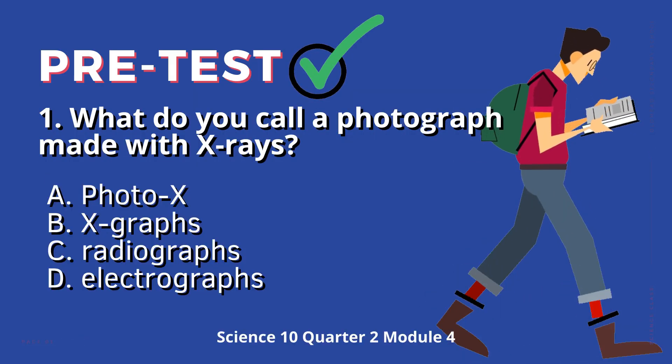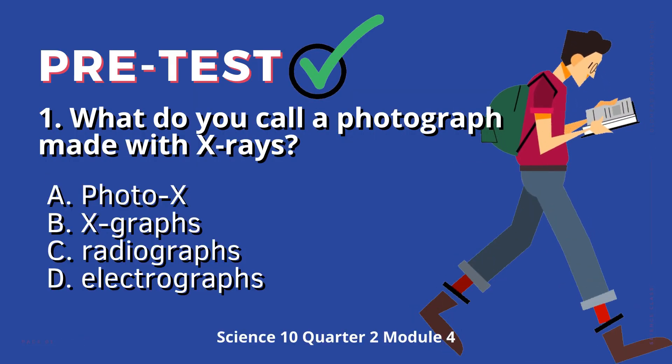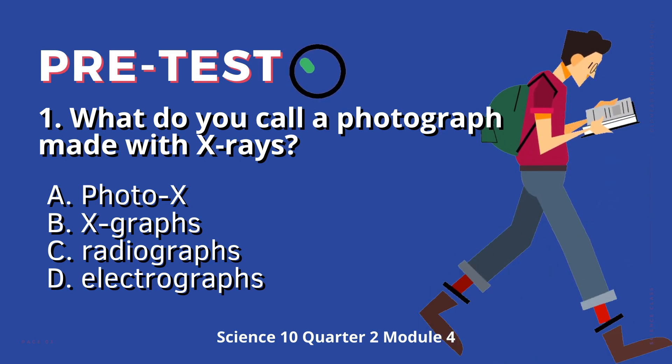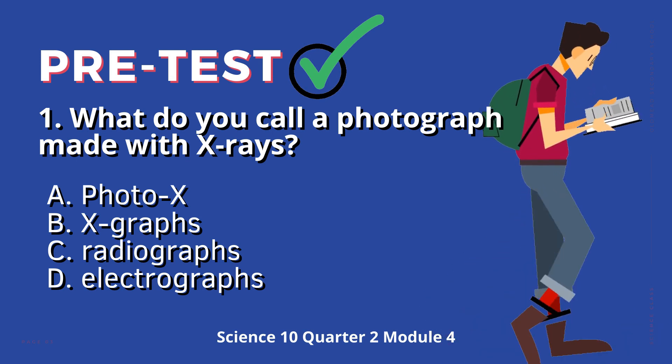Question 1: What do you call a photograph made with X-rays? A. Photo X. B. X-graphs. C. Radiographs. D. Electrographs.